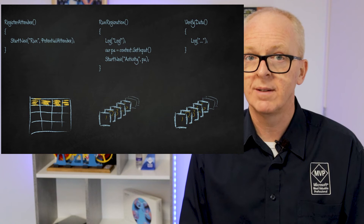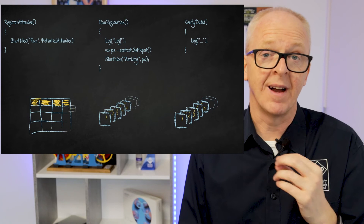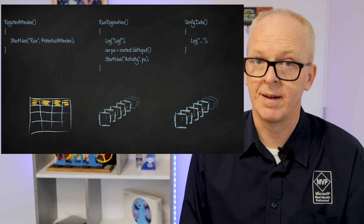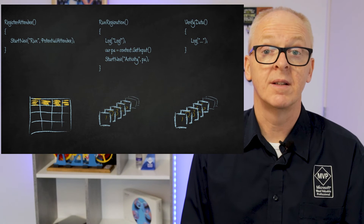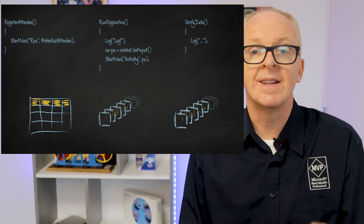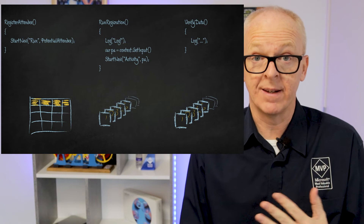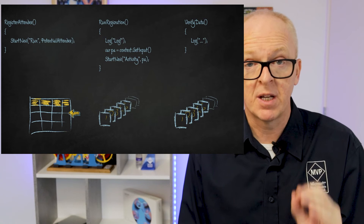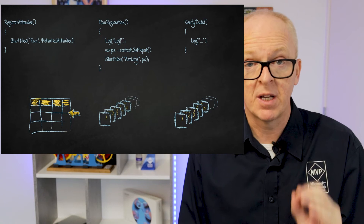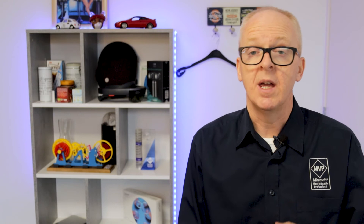Now the orchestration sees this new item in the queue and starts up again. It loads the potential attendee data from the table again, it logs the line to the console again, and then it encounters the line where it is supposed to call the activity. But since it knows its state — because that was stored just before it died — it can see that it already called that. Since the activity placed information about the results, the orchestration can just pick up the result and not call the activity again, and then it moves on to the next line. If that were to be another activity call the same thing would happen again — it places the item on the queue, dies, waits for a signal, starts all over, reads the potential attendee, logs to console, skips the first activity and loads that result, skips the second, and so on.